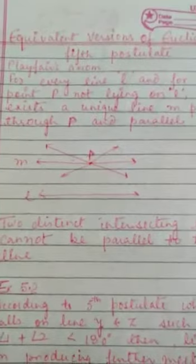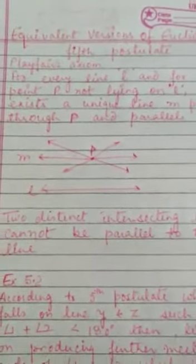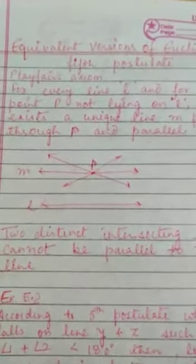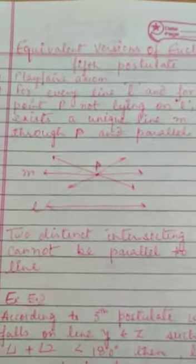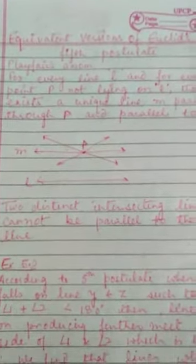First, John Playfair was a Scottish mathematician. In 1729, he gave an axiom which is famously known as Playfair's axiom and it is also the equivalent version of Euclid's fifth postulate.